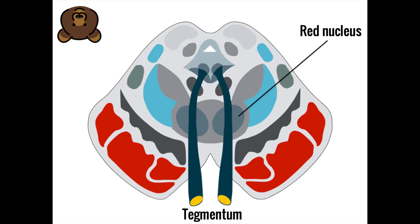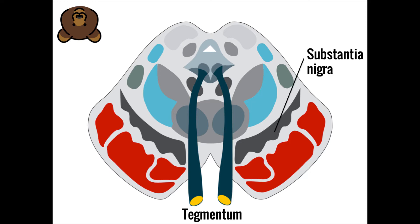The red nucleus is also found in the midbrain and plays a minor role in movement. At the base of the ears lies the substantia nigra, which forms part of the basal ganglia — in fact, it's the only part of the basal ganglia that lies outside of the cerebrum.